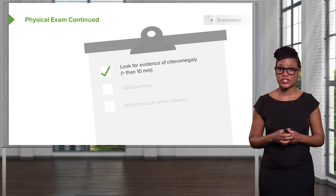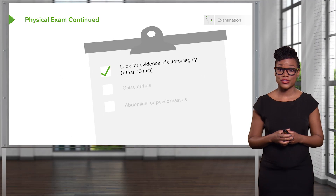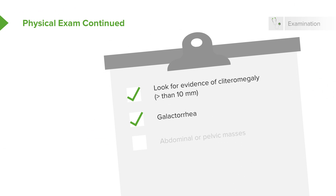Let's now go over a checklist. If you see evidence of clitoromegaly, you should think that this patient has androgen excess. If she has galactorrhea, you would expect elevated prolactin — that's correct. Sometimes you can see abdominal or pelvic masses that can actually secrete androgens, which lead to hirsutism.